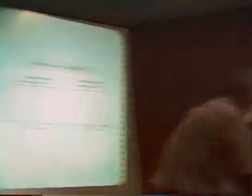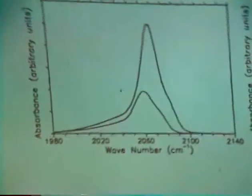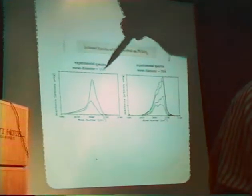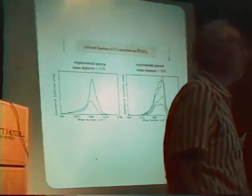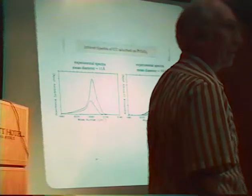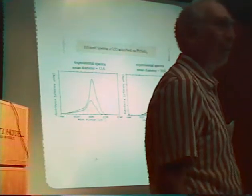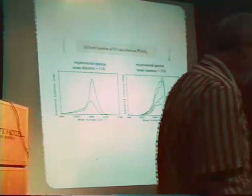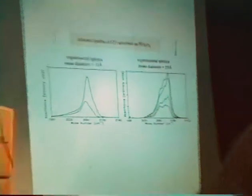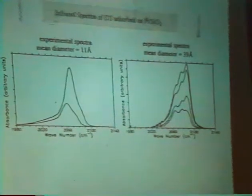I'm going to show you two examples of systems where I think we can get some intuitive understanding by this kind of shifting. We've looked at CO on platinum particles, two different samples which have different mean particle sizes. The mean of one of these is 11 angstroms and the other is 39 angstroms. When you absorb CO on those two different samples, you get very different spectra. These are experimental spectra.